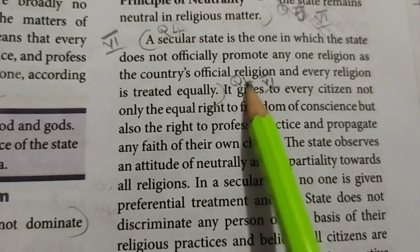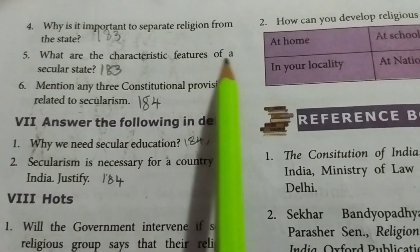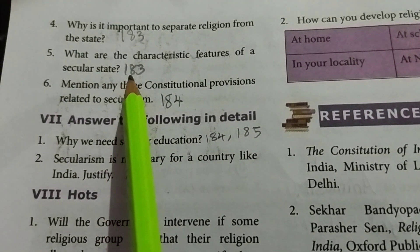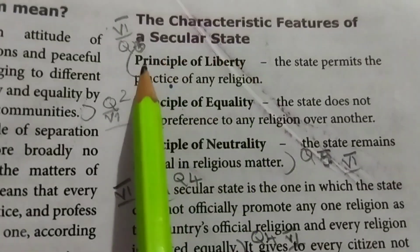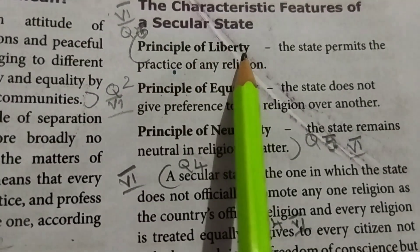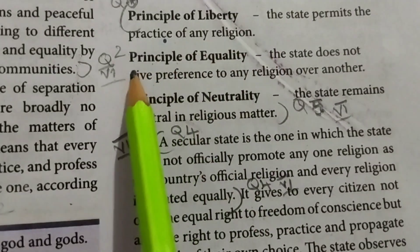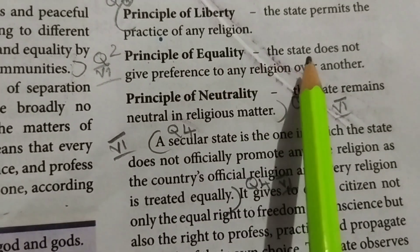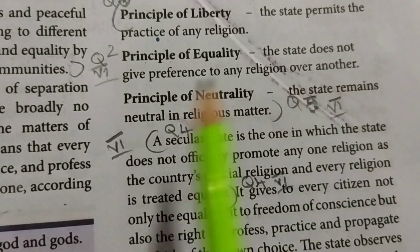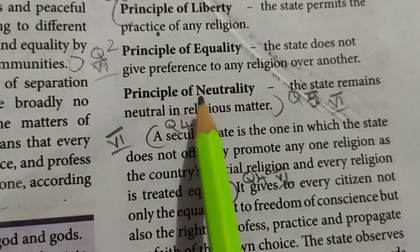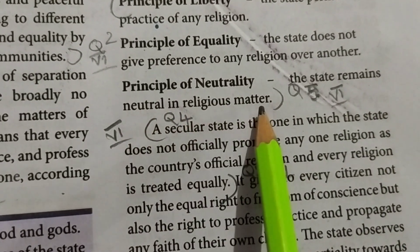Question 5: What are the characteristic features of a secular state? The characteristic features of a secular state are: First — Principle of Liberty: the state permits the practice of any religion. Second — Principle of Equality: the state does not give preference to any religion over another. Third — Principle of Neutrality: the state remains neutral in religious matters.